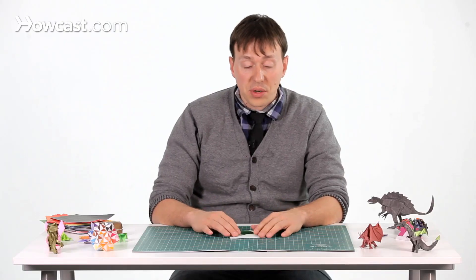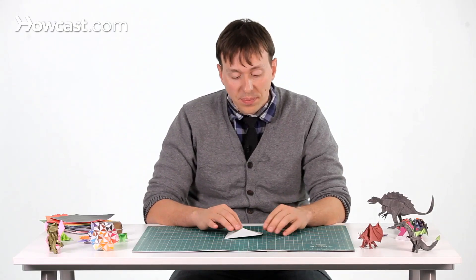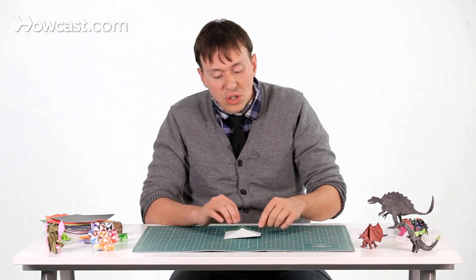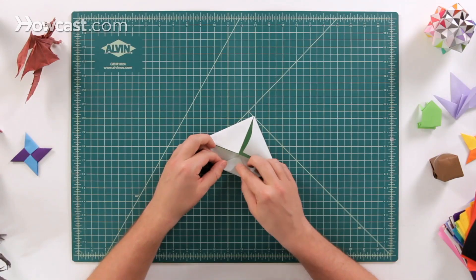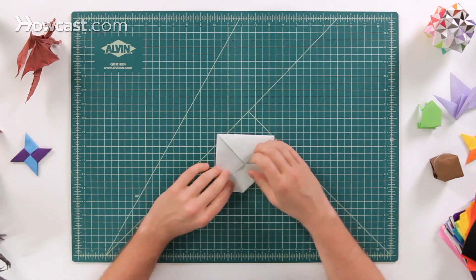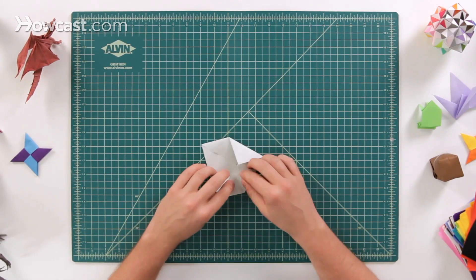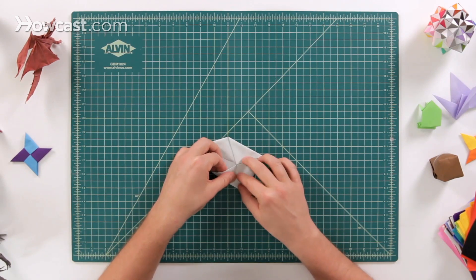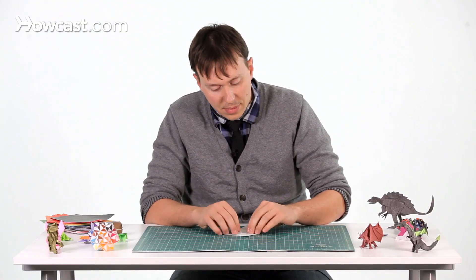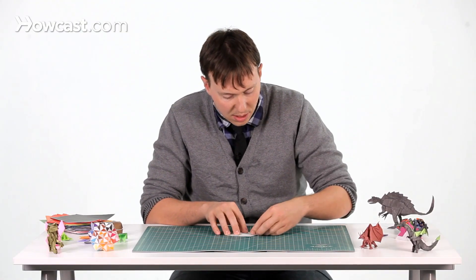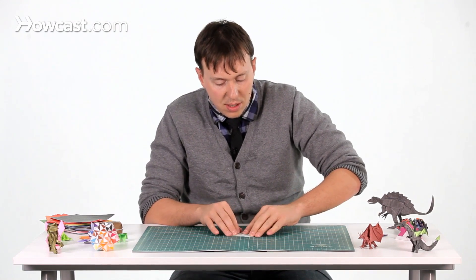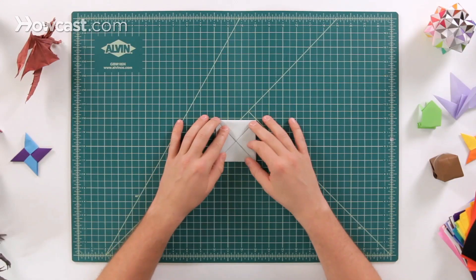Now we're actually going to do a second blintz base as well. So we're going to take all four of these new corners and fold them into that center. And work that all the way around. This is called a double blintz base. Just like that.